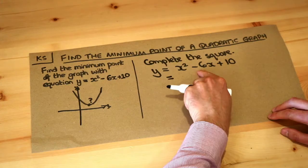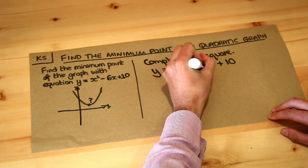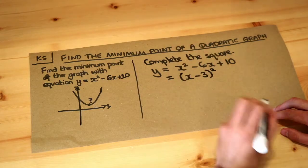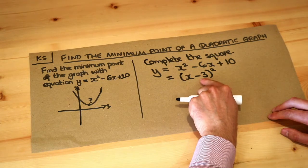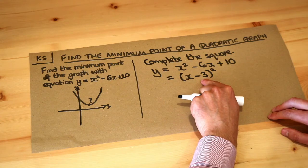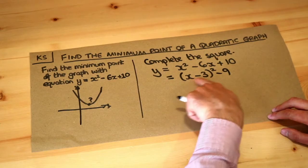You halve the number in front of the x, so it's gonna be x minus 3, close the bracket and then squared. Then you take that value, square it - so minus 3 squared is 9 - and then throw it away, so we don't want that, minus 9.